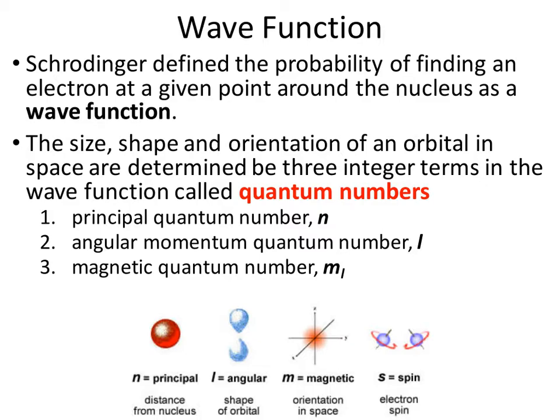Now there are four quantum numbers, but only three describe the orbitals. The fourth quantum number talks about the electrons in these orbitals. The three quantum numbers we're going to talk about are: the principal quantum number defined by n, the angular momentum number defined by l, and the magnetic quantum number defined by m sub l.